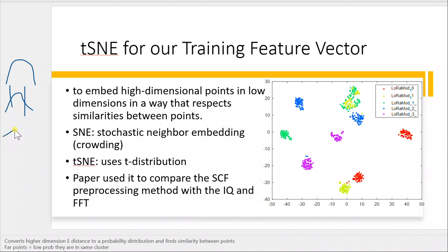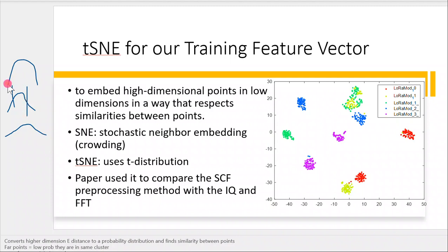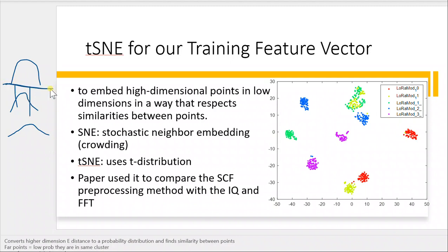To improve SNE and solve the crowding problem, they used the t-distribution. The t-distribution is essentially the same shape as the normal distribution, but its tails are much larger. So things are not all crowded in the middle — the larger tails spread things out — and by using the t-distribution they solved the crowding problem.